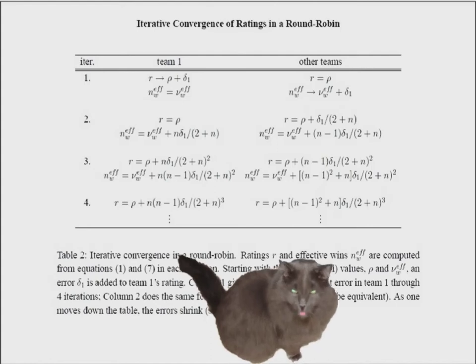In essence, each game connects two teams via an equation, and as more games are played, eventually each team is connected to every other team through some chain of games. When this happens, a system of equations is coupled and a computer is necessary to solve them simultaneously.